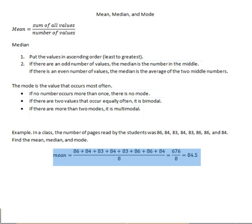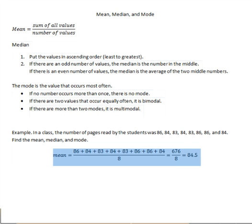For the median, we first put the values in ascending order: 83, 83, 84, 84, 84, 86, 86, 86.